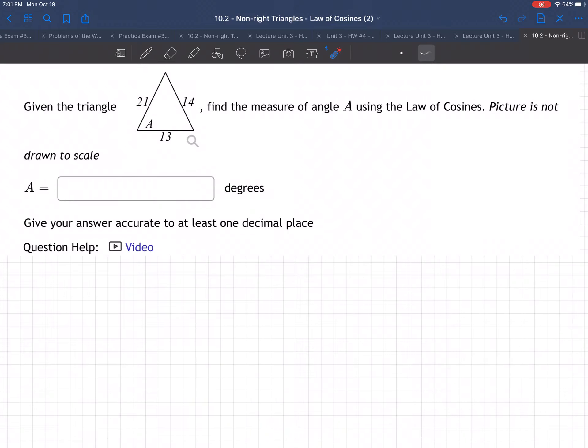Here's an example in which we are trying to find the measure of angle A using the law of cosines. So using this law of cosines, first off, what is the law of cosines?